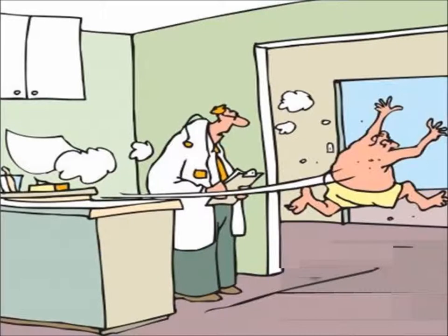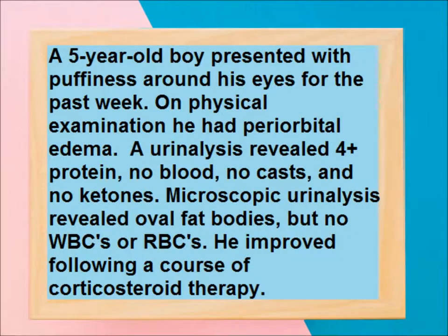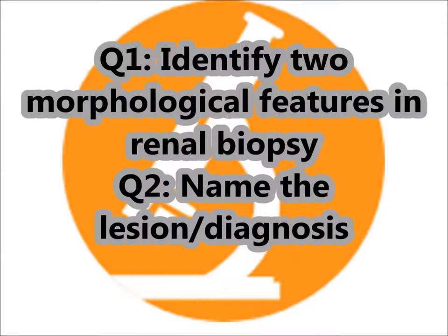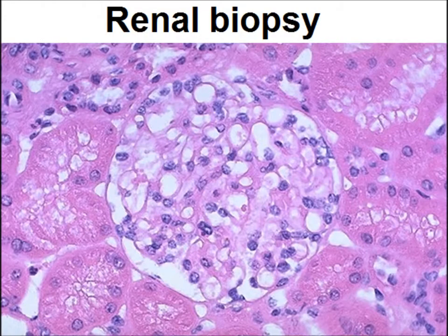Usually patients come to the doctor or pathologist with a clinical history. There is a history of a 5-year-old boy presented with puffiness around his eyes for the past week. Urine analysis revealed 4+ protein, and there is a renal biopsy along with the clinical history. Identify two morphological features in the renal biopsy.